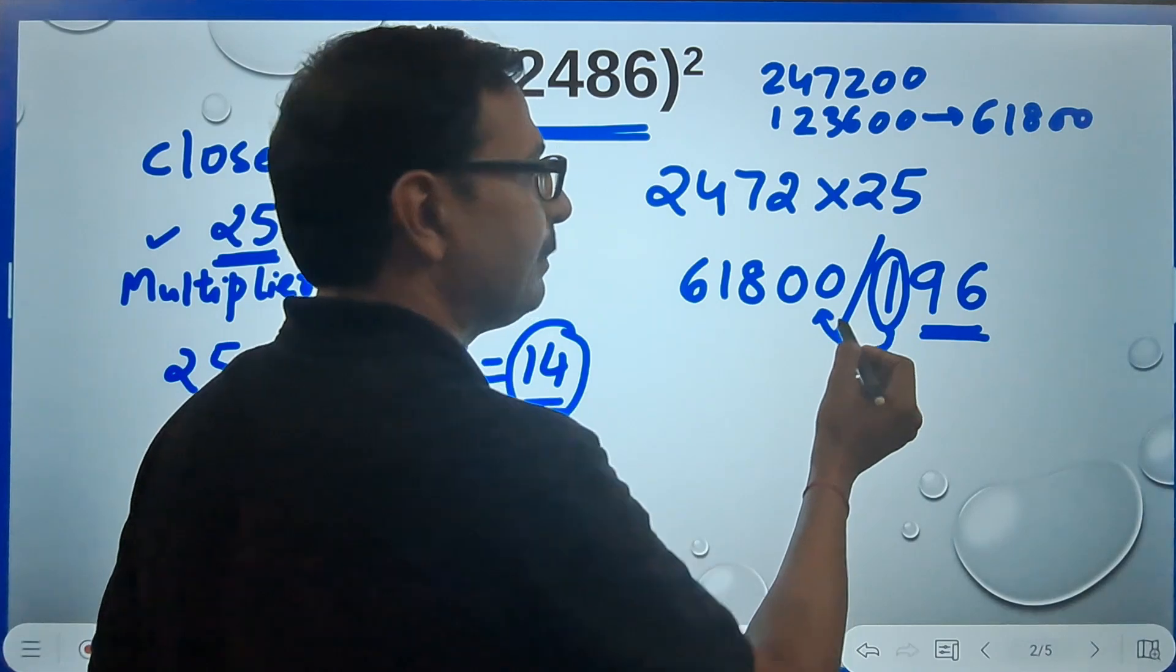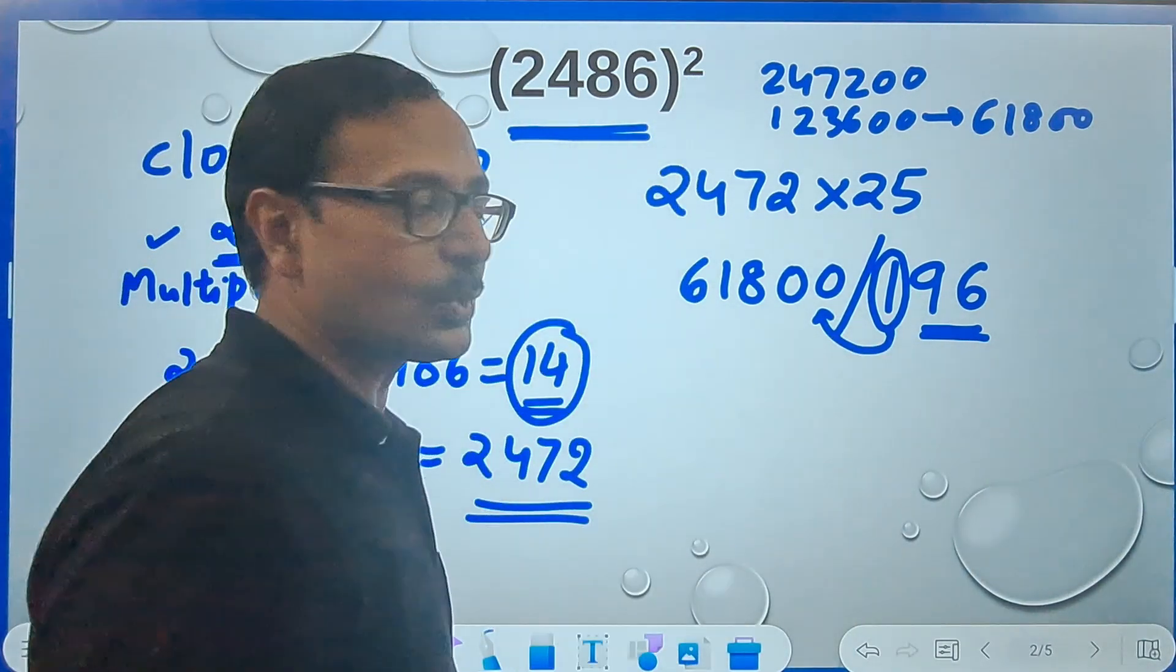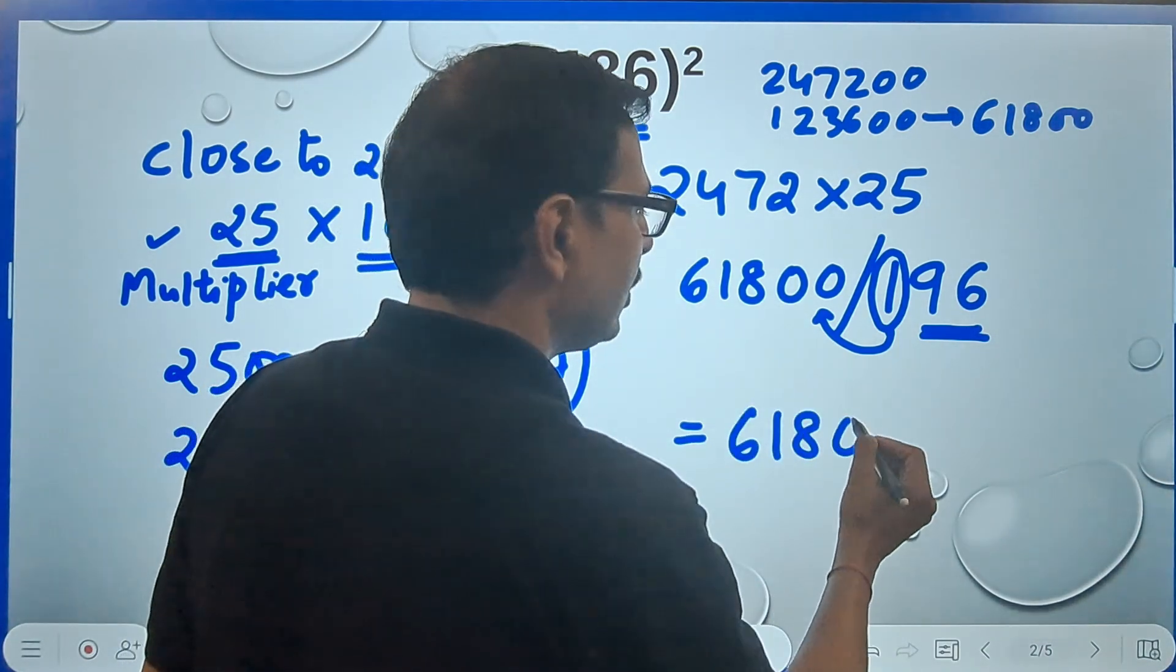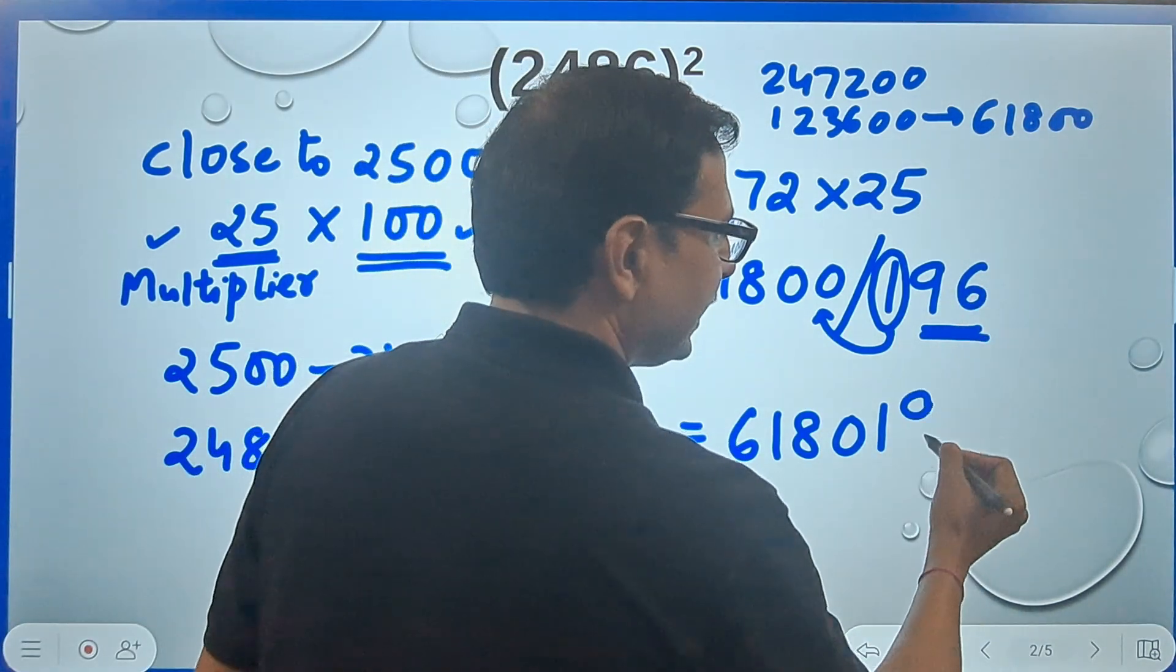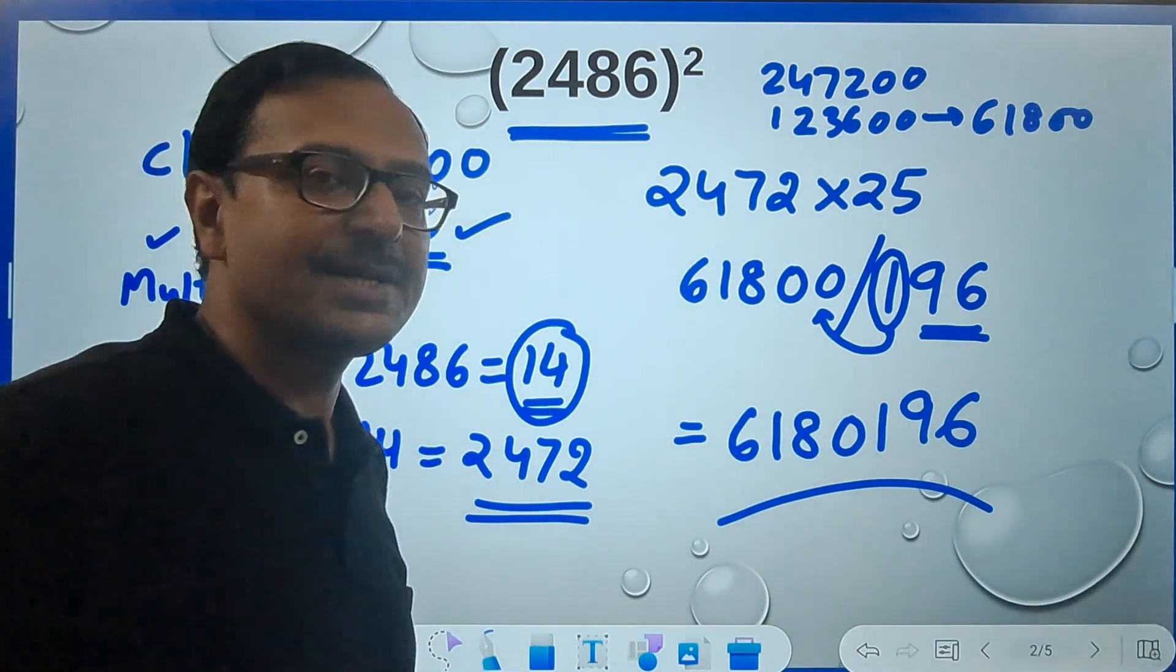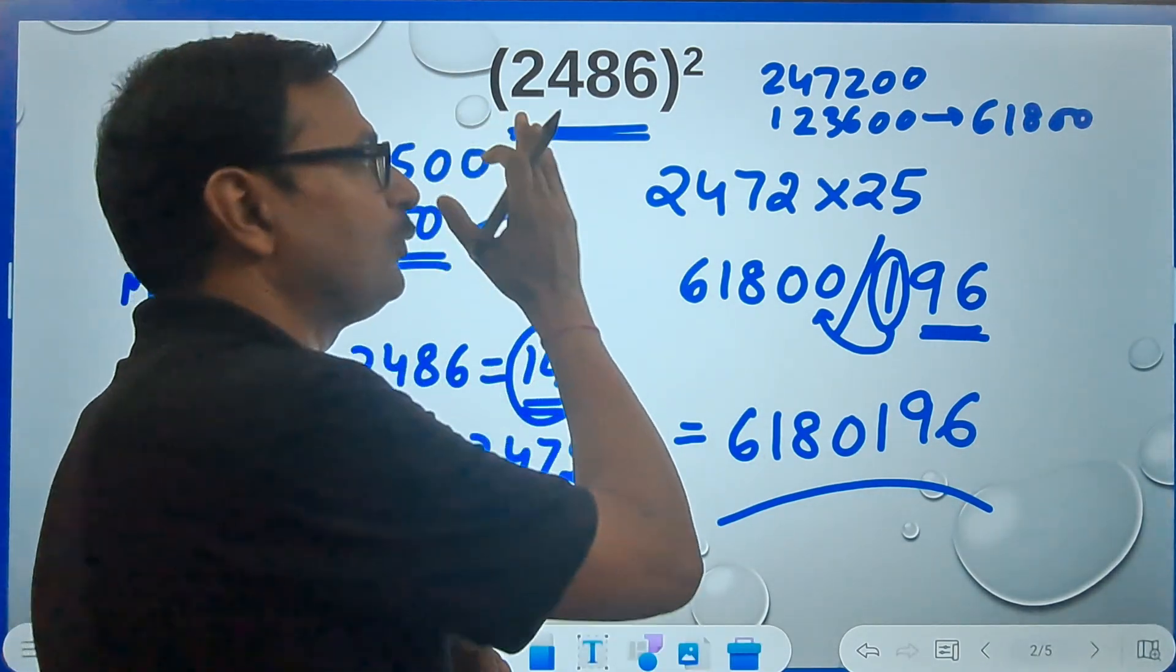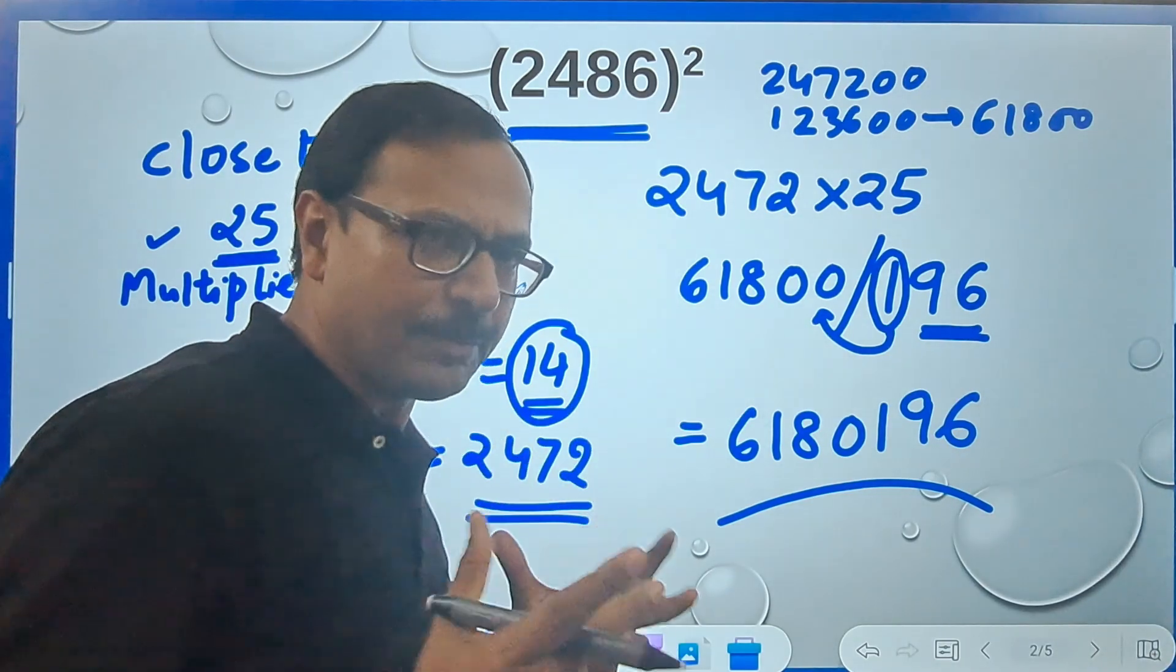If any digit is left we will carry it forward to the previous number. So what will be your answer for 2486 square? It will be 61800 and one carried forward, so it gives you one and then this 96. Pick up your calculators and check friends, you will be really surprised that yes, 6180196 is the square of 2486. Let's have more complicated numbers.